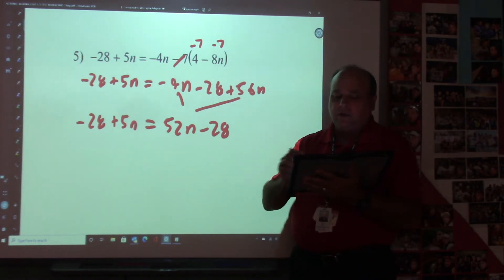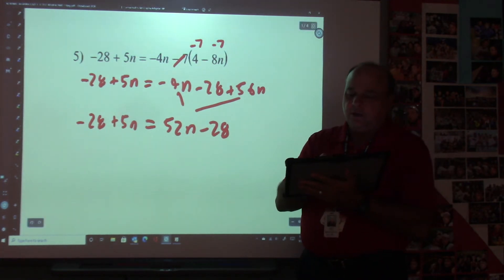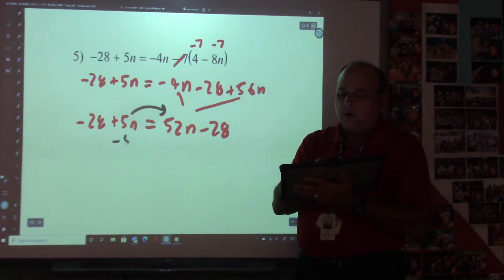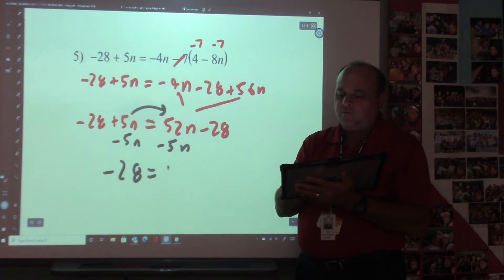Now then, what's my smallest letter here? My smallest letter is the 5n, so I'm going to move it across. I can't use the calculator yet. -28 = 47n - 28.